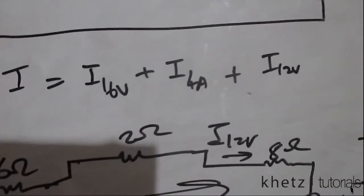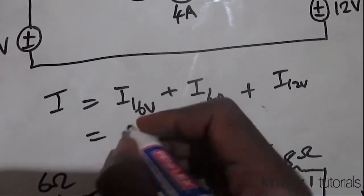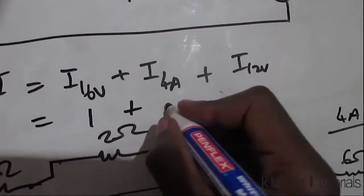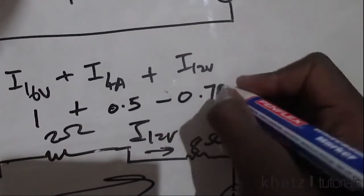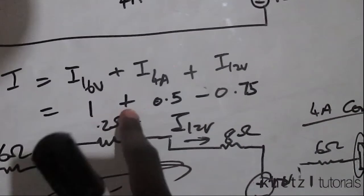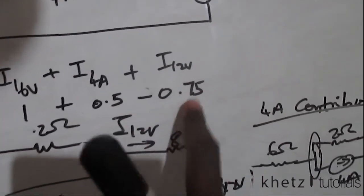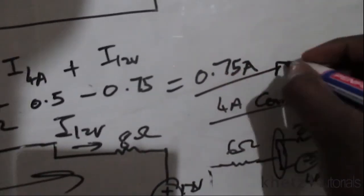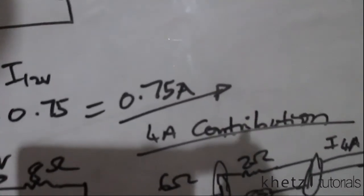Using superposition, the final answer for i is the sum of all contributions: the 16 volt contributes 1 A, the 4 ampere source contributes 0.5 A, and the 12 volt source contributes −0.75 A. So i = 1 + 0.5 − 0.75 = 0.75 amperes. Therefore i, using superposition, equals 0.75 amperes.